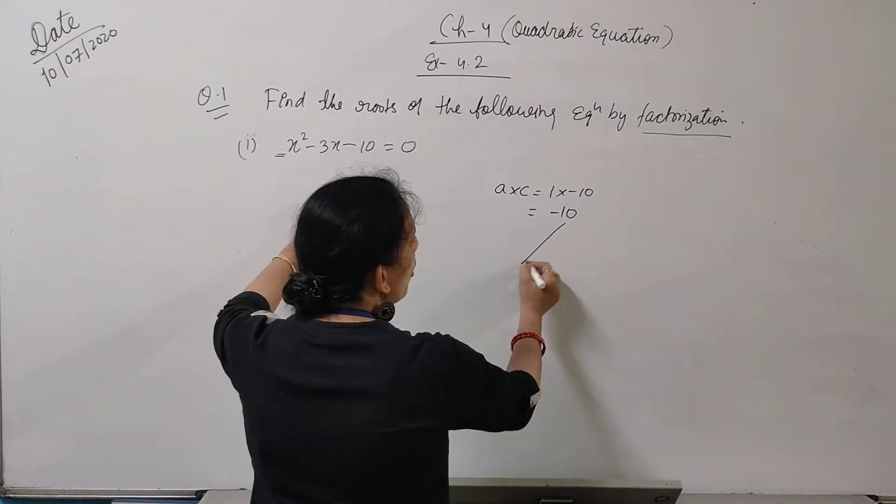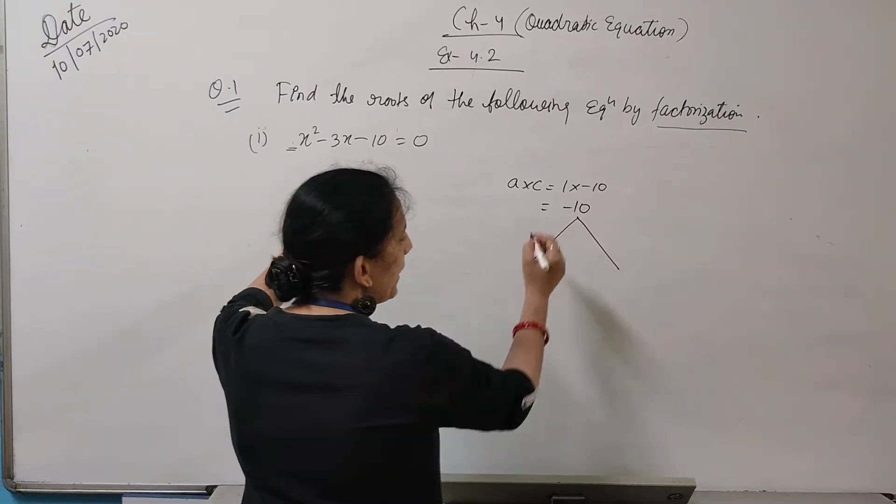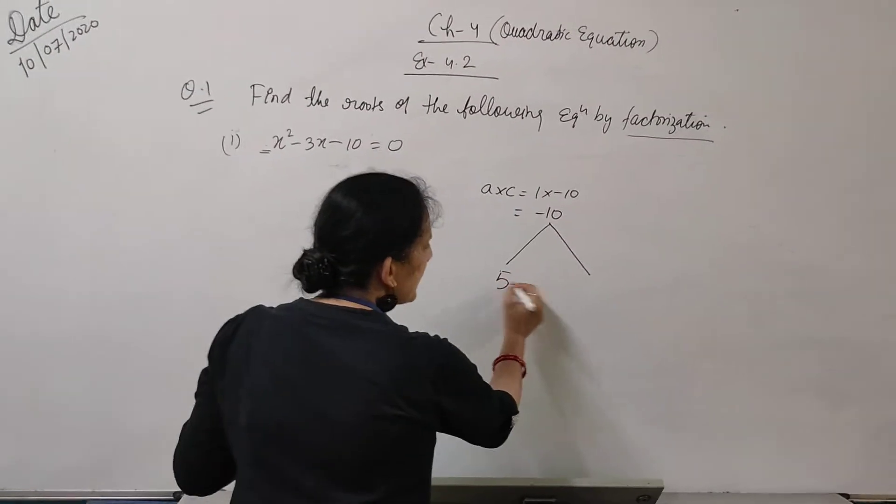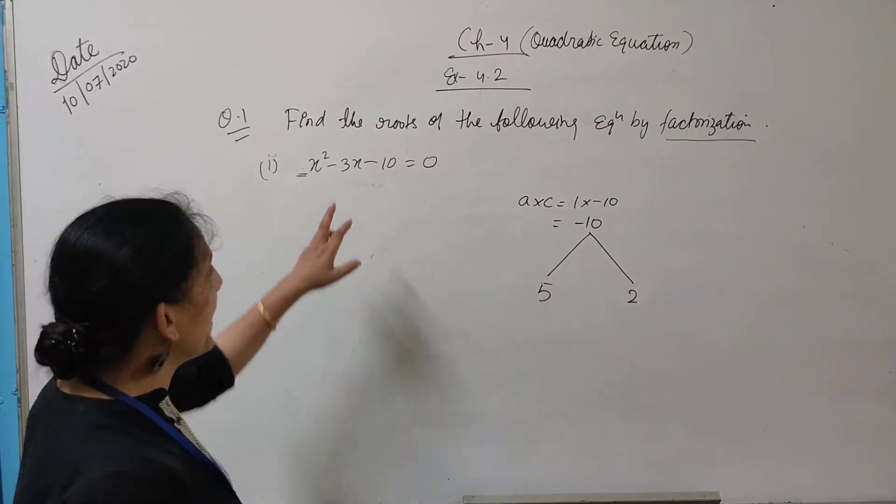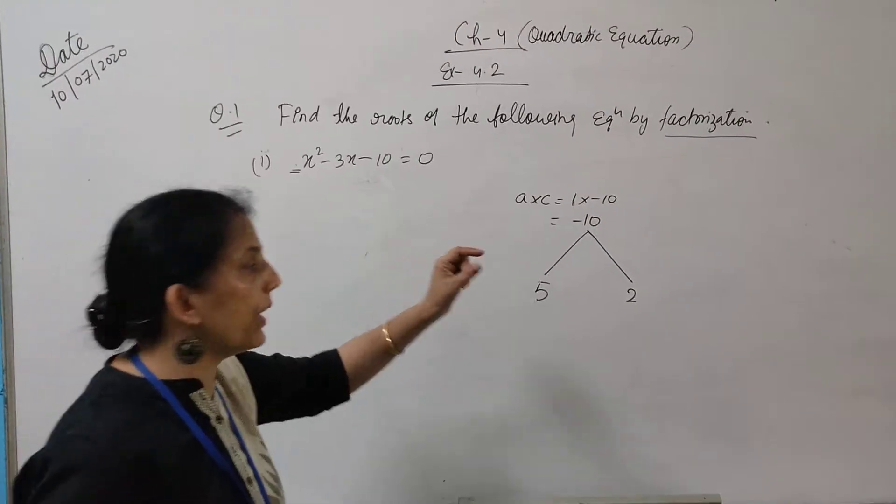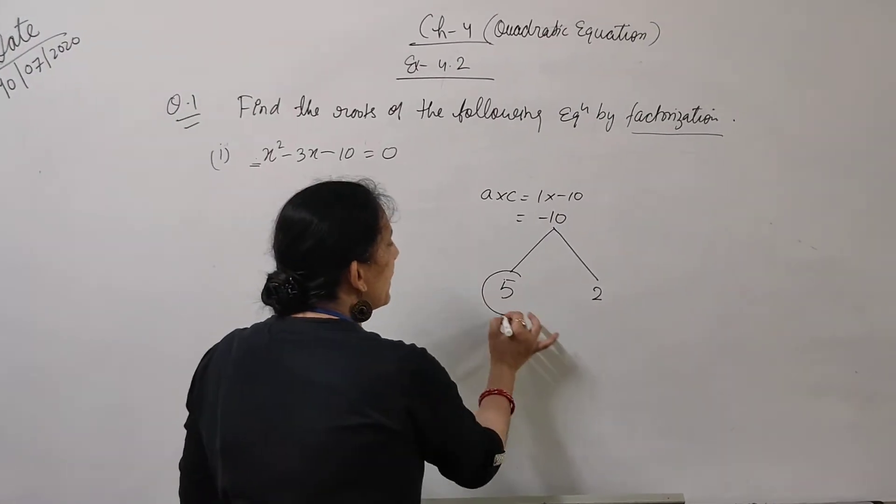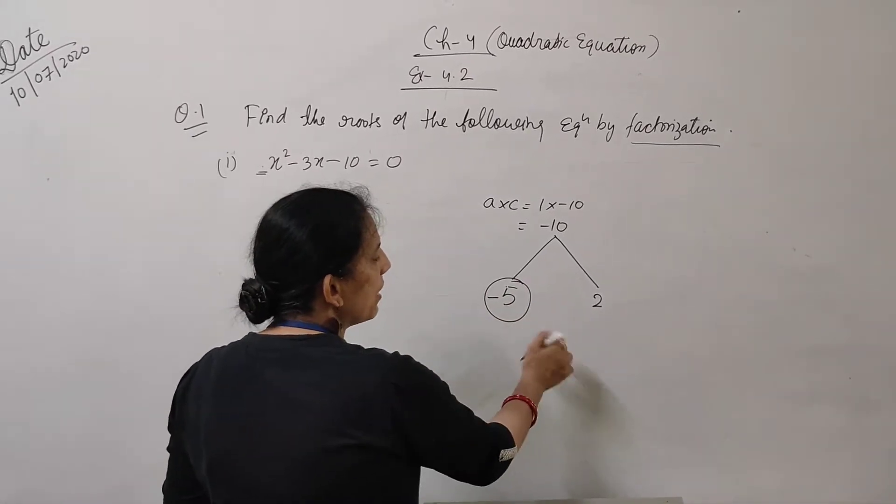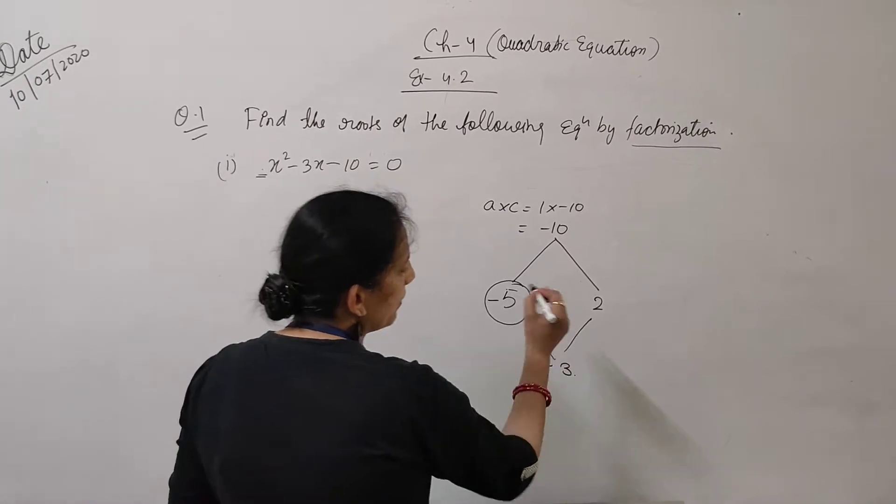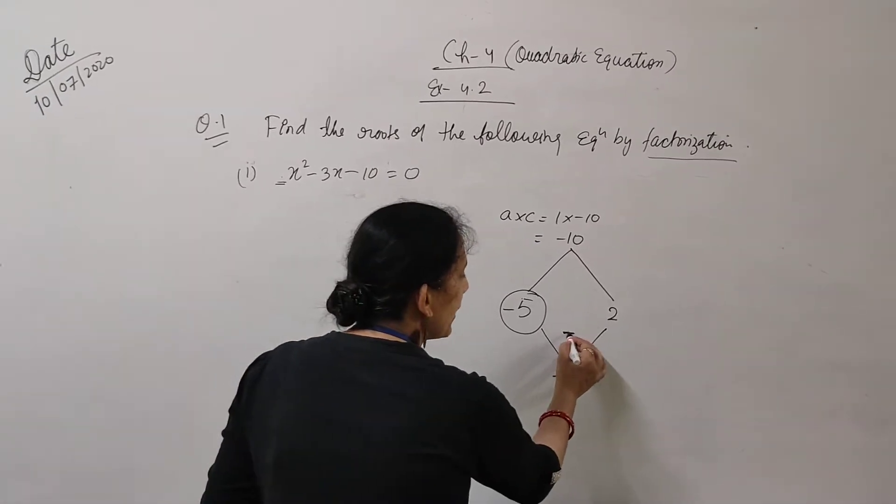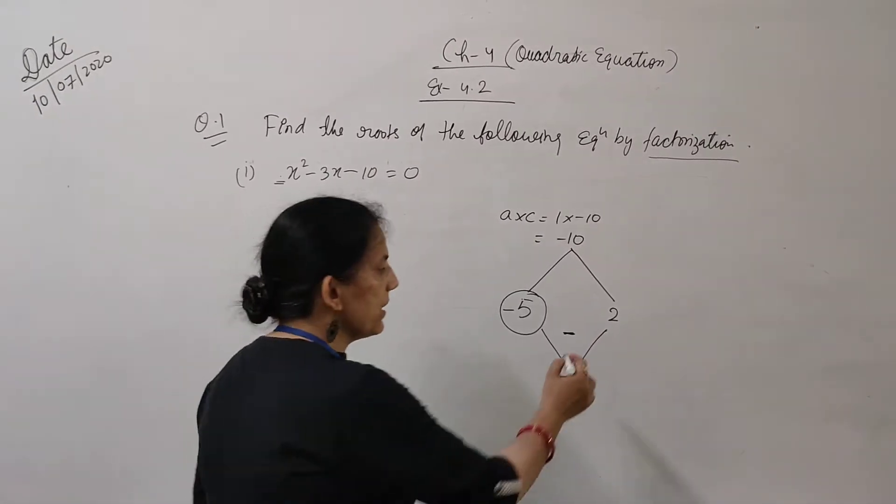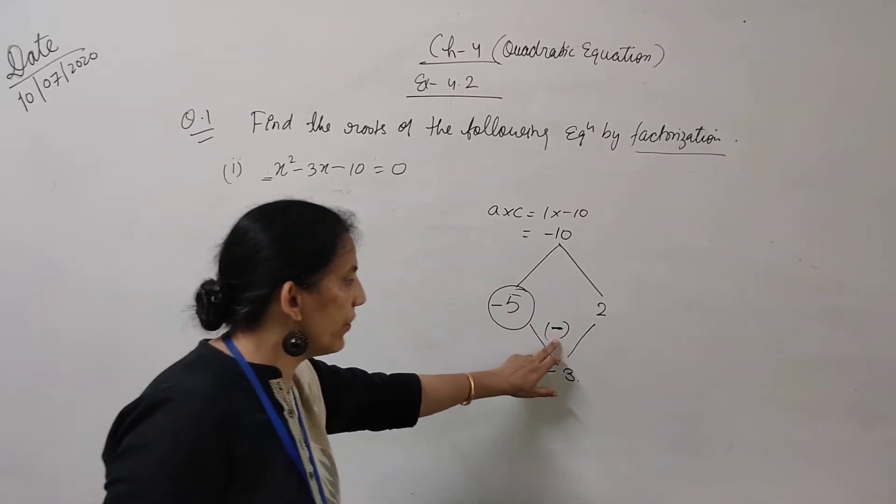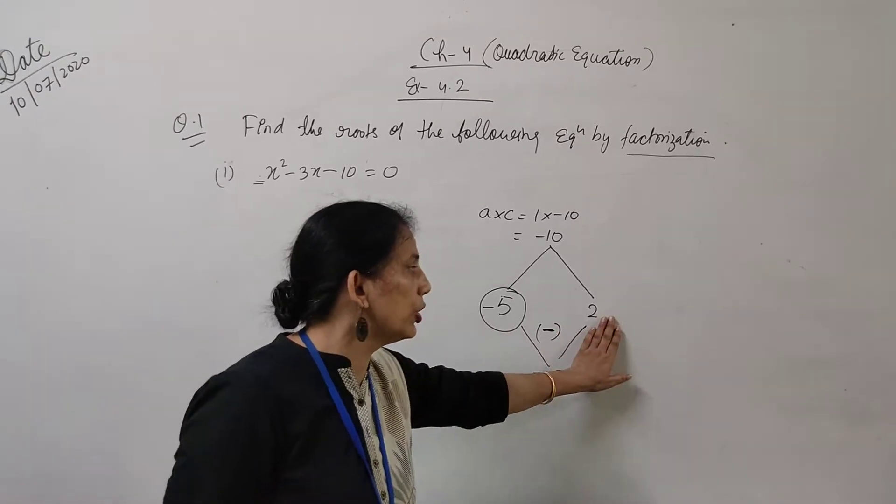So we have to find factors of 10 whose difference is equal to the middle term. What is the middle term? Minus 3x, negative. So, find out the factors of minus 10. Ten's factors - 5 minus 2 is 3. So 5 and 2 we can take. But I need negative sign with 3. Therefore, the bigger one we have to take negative. Because plus minus gives minus, so the answer will be minus 3 with the difference.